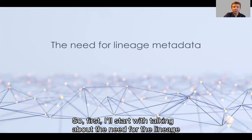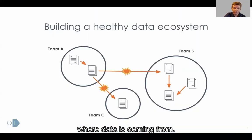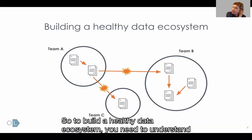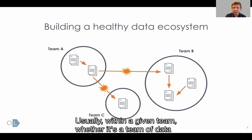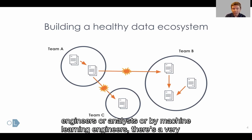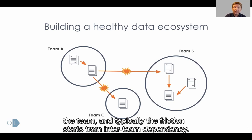First I'll start with talking about the need for lineage metadata — this is how we understand data, where data is coming from. To build a healthy data ecosystem you need to understand dependencies between teams. Usually within a given team, whether it's a team of data engineers, analysts, or machine learning engineers, there's a very good understanding of what the stack is or what the dependencies are within the team. Typically the friction starts from inter-team dependency.